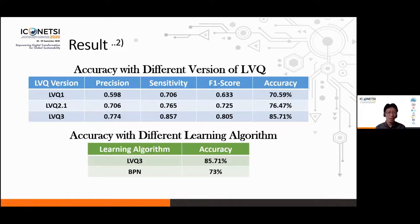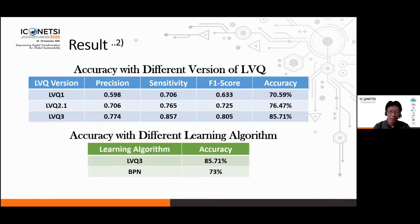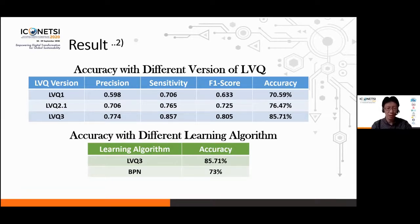We also compared some versions of LVQ using the same parameter values and the same training/testing data ratio. From the experiment, we can see that LVQ version 3 gives the best accuracy of 85.71%, compared with LVQ version 1 and version 2.1.